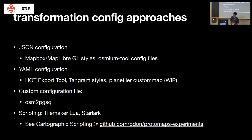I did a quick survey of ways to approach this task of transforming OSM data into tabular format. There are approaches like having a JSON configuration, very similar to how map renderers work — they need to translate arbitrary keys and values into some set of layers. Or something like YAML, as used in the HOT export tool. And for tools like osm2pgsql, they have a custom configuration language built in. If you follow the GitHub link, I've done some survey research on how to solve this problem in a flexible way.